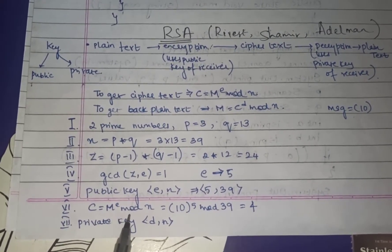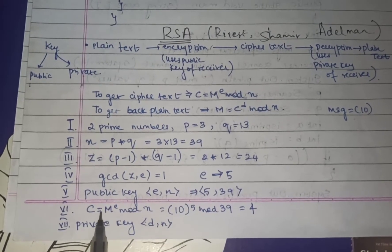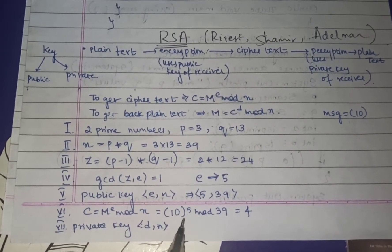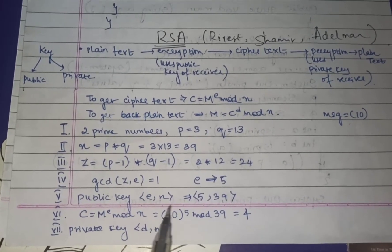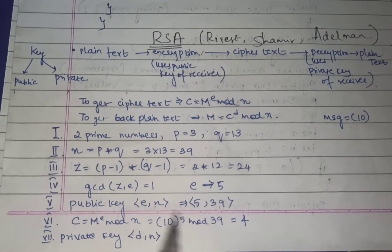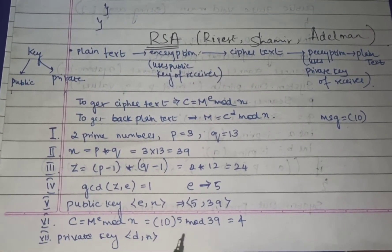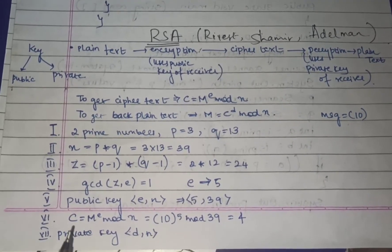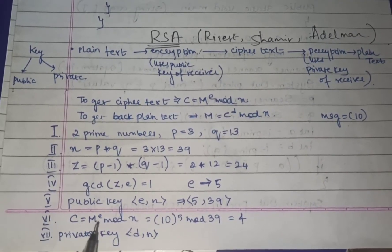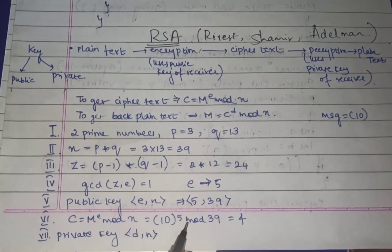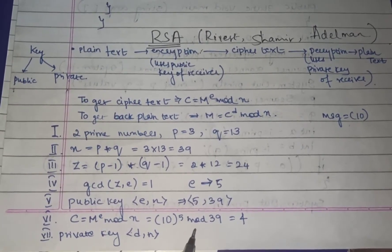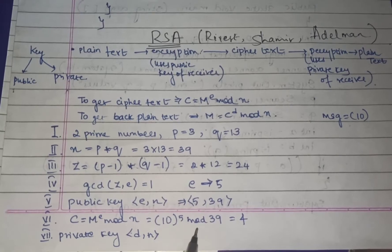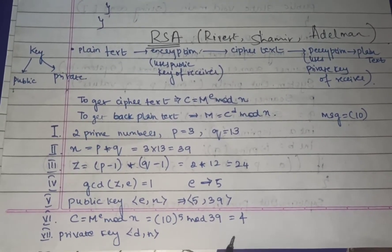Now find the ciphertext: c = m^e mod n. The message m is given by the sender — say m = 10. So c = 10^5 mod 39, and after calculation you get c = 4.